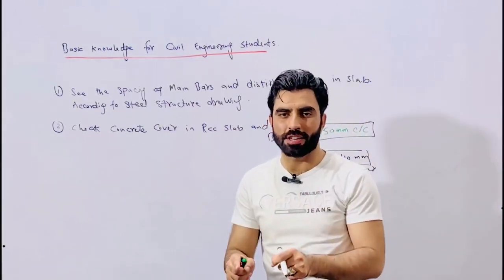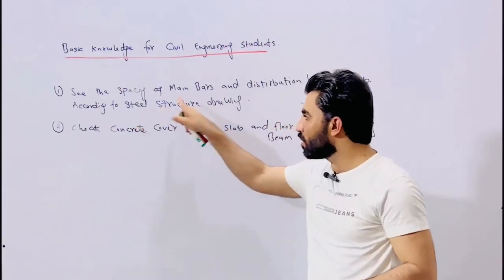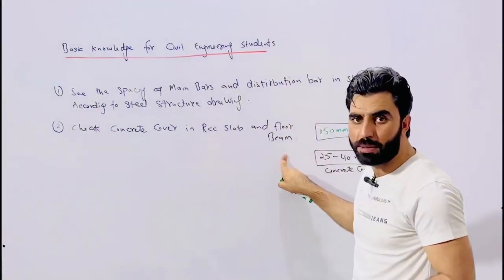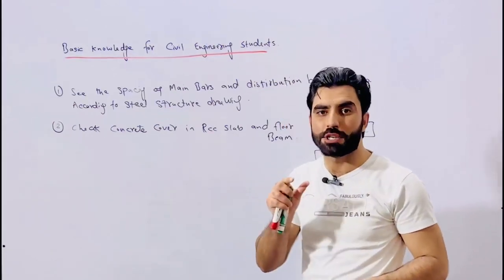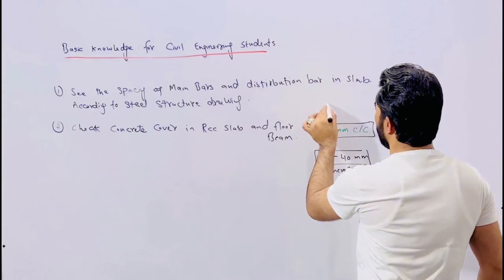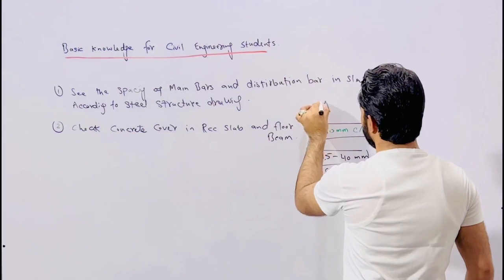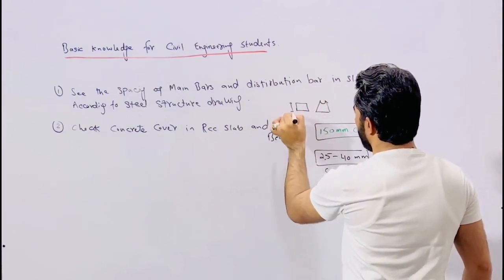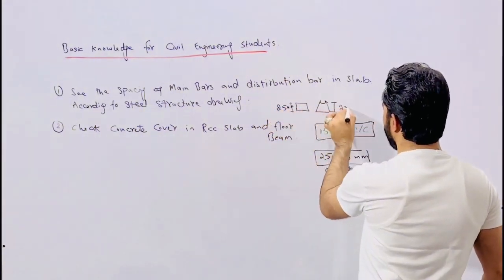Just check everything on the construction site. Check the spacing of main bars and distribution bars. Check the concrete cover in the RCC slab and floor beam. After placing the steel reinforcement, we provide concrete blocks — they come in different shapes — but the depth should not be less than 25 mm. These are very important things.